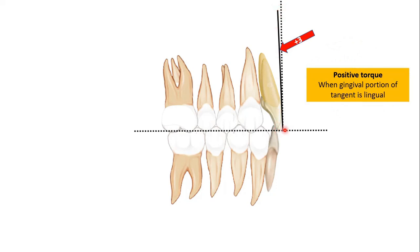Why are we calling this positive torque? If the gingival portion of this tangent line is lingual as compared to the incisal portion of this tangent line, we call it positive torque. And the labial surface of the upper lateral incisor has positive three degree torque.